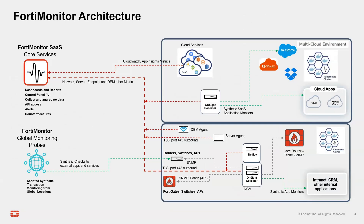What that means is in response to an incident, we can take an action to quickly try to resolve the issue. Some of the other components here are the global monitoring network, where we have over 50 locations around the world where you can test the availability and performance of your external facing applications and services to make sure that they're all up and responding quickly from all different locations.